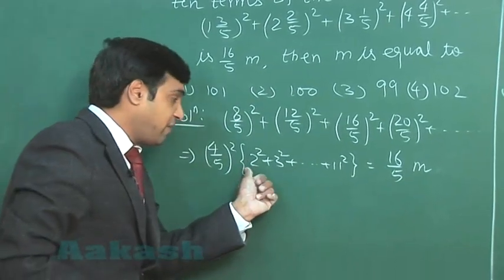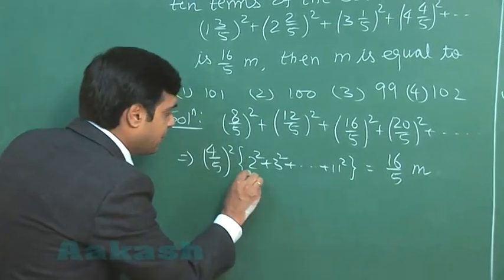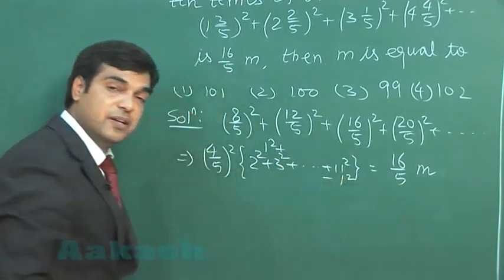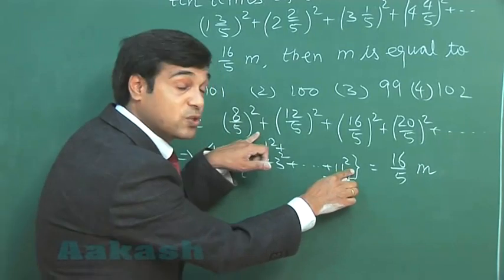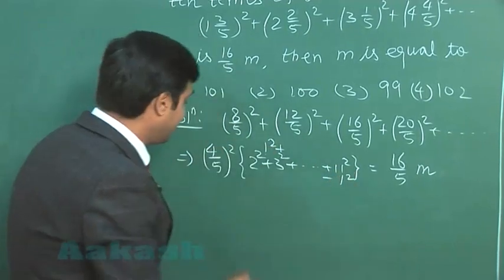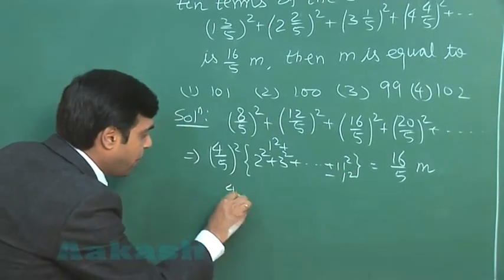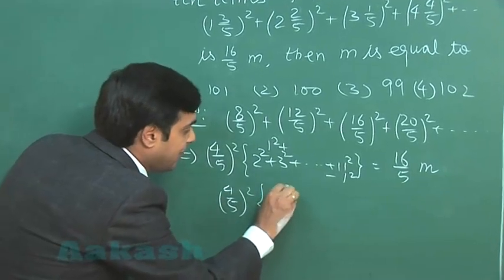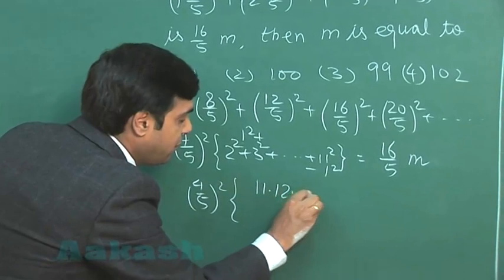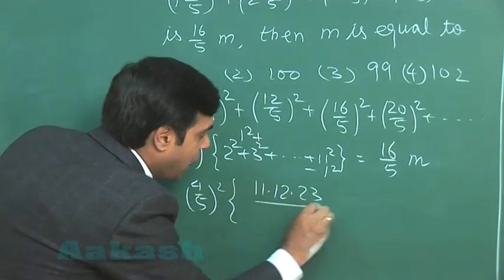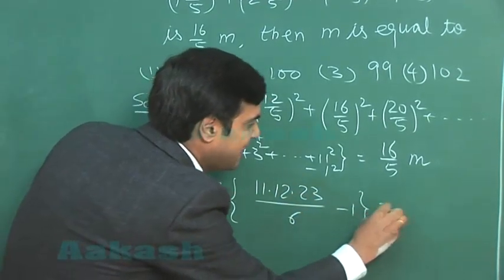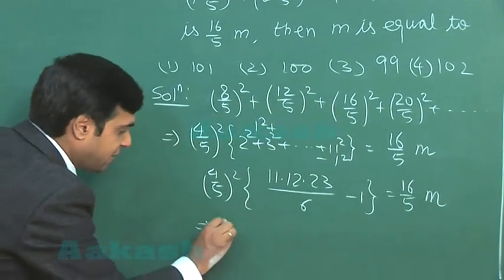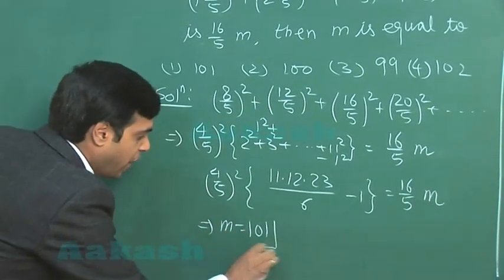We can see if I add and subtract 1², that I can write the sum of squares of first 11 terms. This gives me (4/5)² multiplied with 11×12×23 upon 6 minus 1 is equal to 16/5 m. Simplifying, we get the value for m as 101.